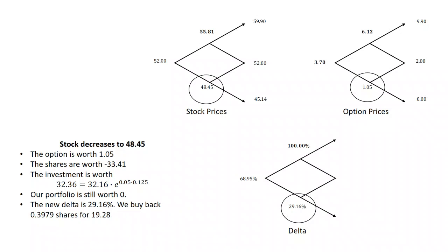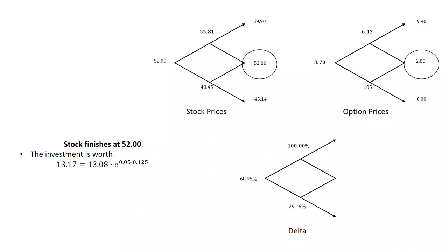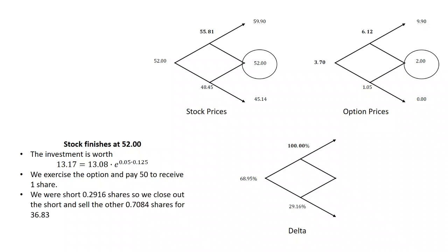Now we've got the wrong number of shares. We have to buy back 0.3979 shares for $19.28, and we have $13.08 to invest at 5% for 0.125 years. Now there are two possibilities. Stock goes to 52. The investment's worth $13.17. We exercised the option, pay $50, receive a share. We were short 0.2916 shares, so we close out the short and sell the remaining 0.7084 shares for $36.83.